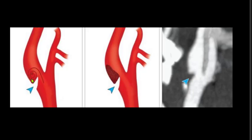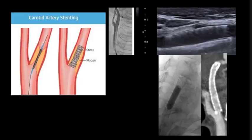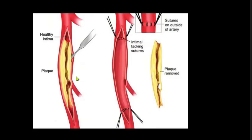There are 3 treatment options. Number 1 is antiplatelet, which is a medical treatment. Number 2 is stent placement in the carotid arteries. And number 3 is carotid endarterectomy — that is, we remove the web through a surgical procedure.